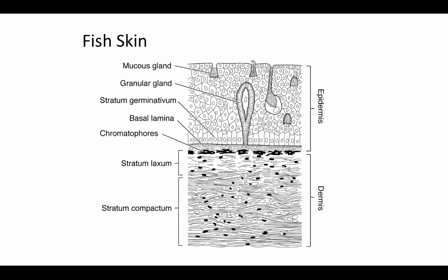When the top layer of epidermis is abraded away, scraped, or just time for it to be sloughed off, it dies via a form of cell death called necrosis — disorganized cell death. The cell membrane opens up and the cell contents are spewed into the environment, and the cell is sloughed off in a very disorganized way. As this happens at the surface, cells are constantly worn away and constantly being regenerated from the stratum germinativum, moving upward toward the surface as more cells are generated beneath them.